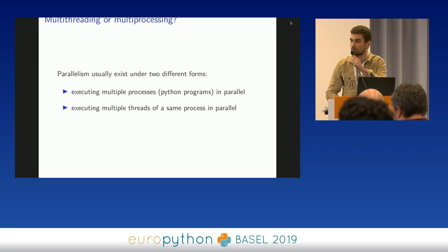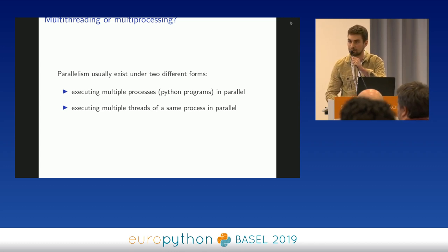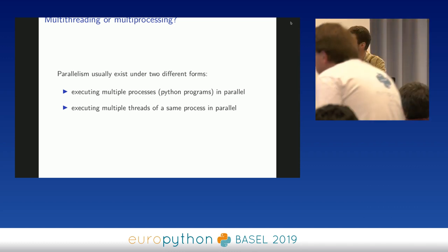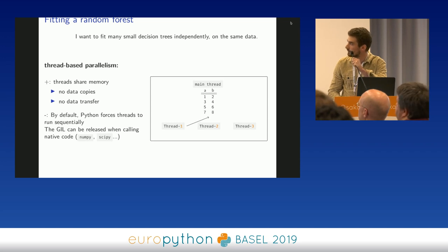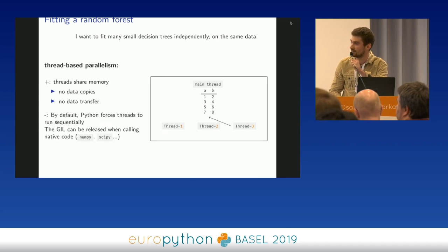Parallelism on a single machine exists under two different forms. You can either create different processes — basically different Python programs with their own memory space — or you can have one single Python program executing different threads in parallel. Spawning multiple threads in one Python program seems smart, because you save memory and have everything in a single process. For example, three threads could each fit different trees of a random forest, all pointing to the same data.